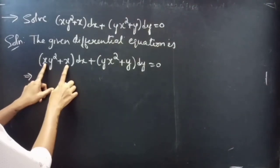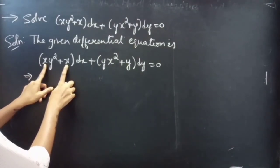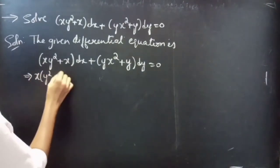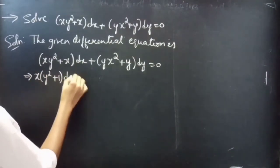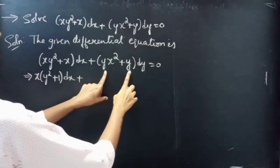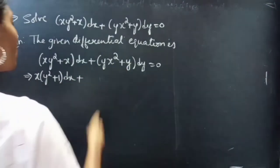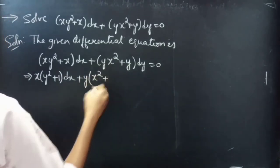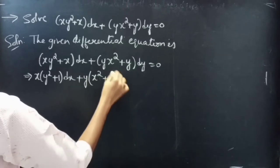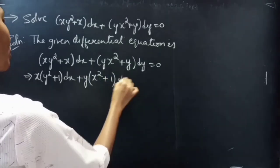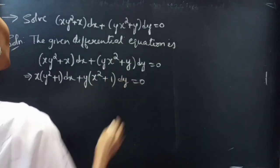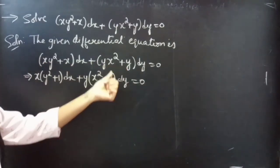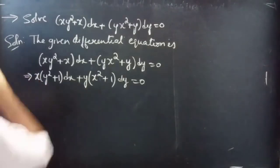In these two terms you are having x, so take x common — you will get x(y² + 1)dx. Here you are having y common in these two terms, so take y — you will get y(x² + 1)dy = 0. We simply took x common from the first two terms and y common from the last two terms.